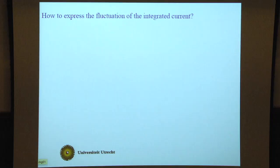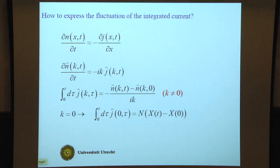To express the fluctuation of the integrated current, you start from the continuity equation for the density, rewrite that into Fourier language, integrate over time. You get n(k,t) minus n(k,0) divided by ik.